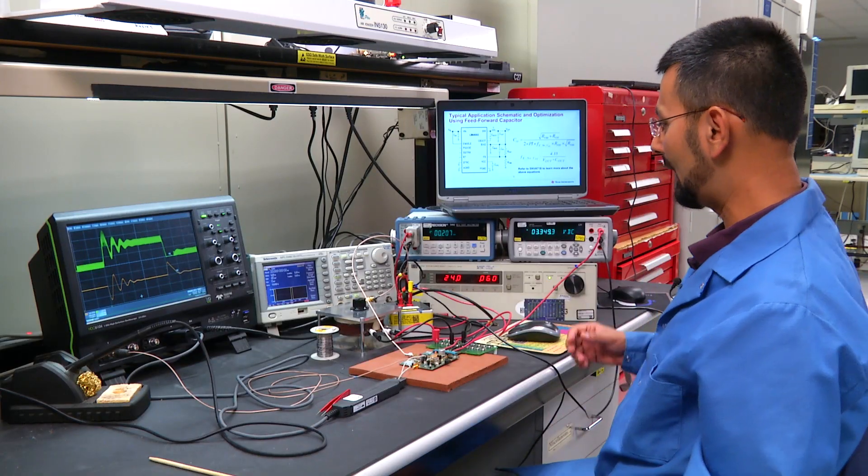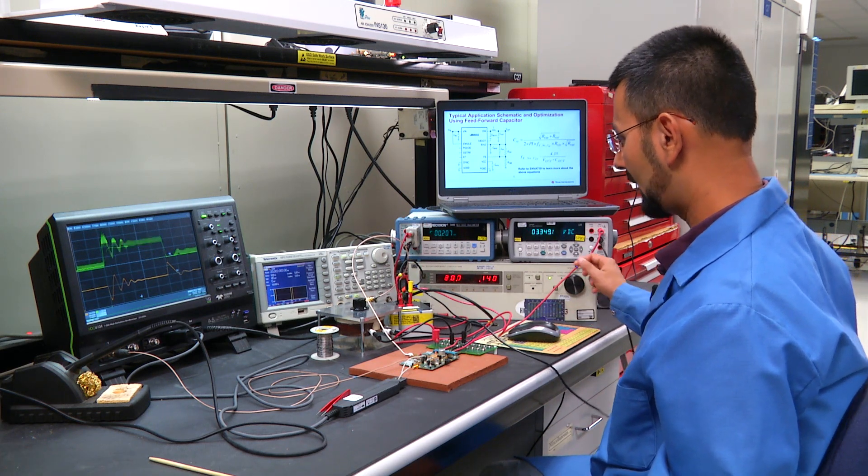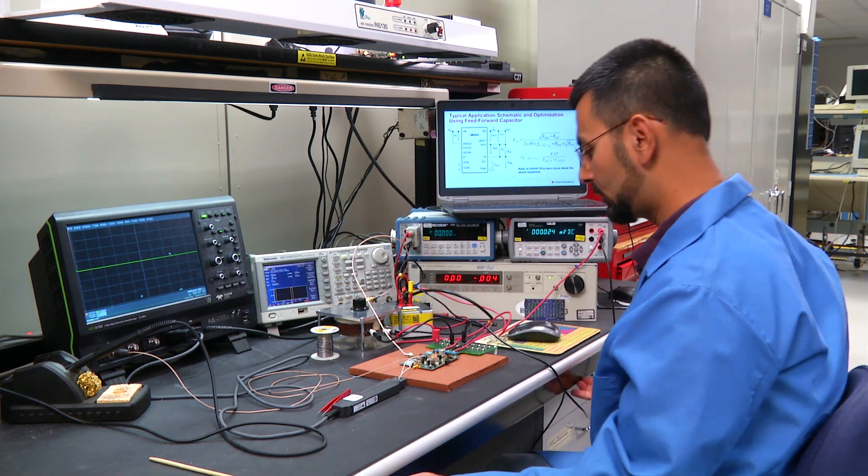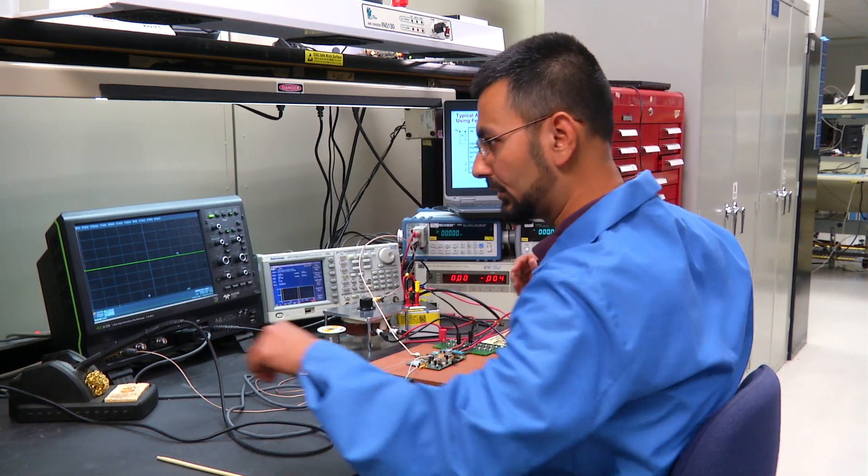I'm going to power down the input power supply and turn off the function generator and we'll solder the feed forward capacitor onto the circuit.